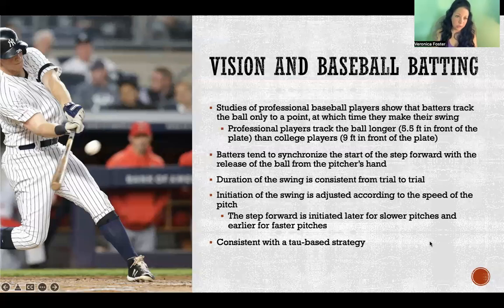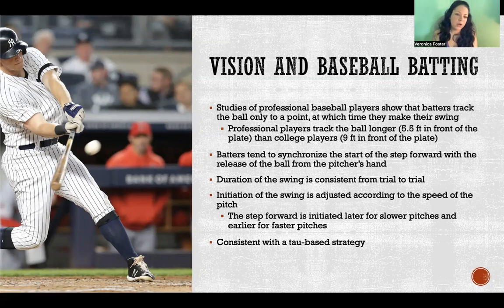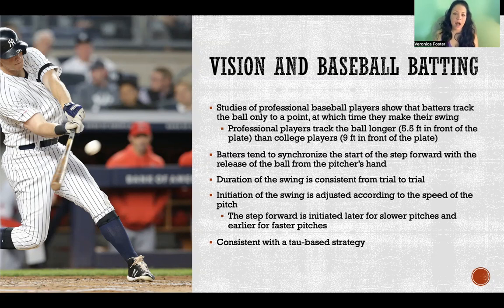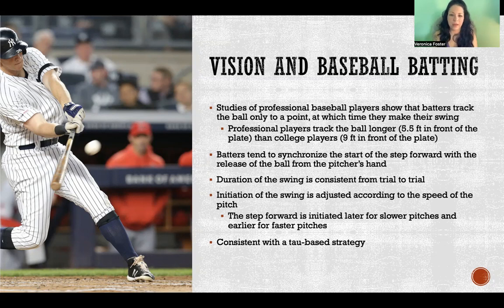Making contact with a flying object — a great example is baseball batting. There are all sorts of studies about batting at different levels. Professional players actually track the ball longer, up until about five and a half feet in front of the plate. College players track and then kind of lose track around nine feet in front of the plate, and this can have a significant effect on their accuracy and skill at batting.